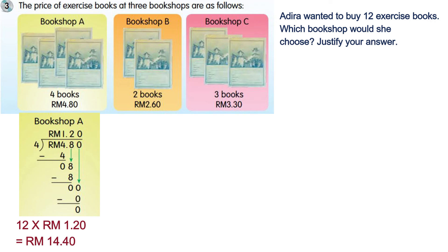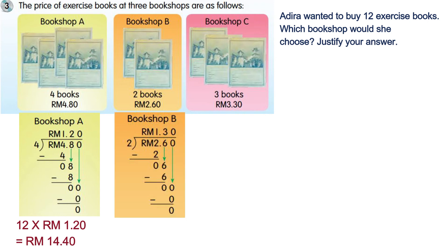For Bookshop B, the price of two books is two ringgit sixty cents, so the price of one book is two ringgit sixty cents divided by two, which equals one ringgit thirty cents. One ringgit thirty cents multiplied by twelve — the price of twelve books is fifteen ringgit sixty cents.